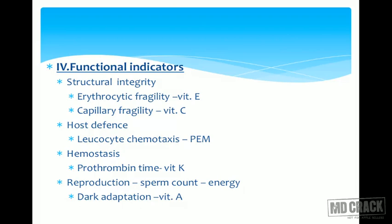Functional indicators provide another assessment approach. Deficiency of vitamin E can cause erythrocyte fragility; deficiency of vitamin C can increase capillary fragility. Protein-energy malnutrition causes problems in leukocyte chemotaxis. Vitamin K deficiency causes problems with prothrombin time. Sperm count directly correlates with the energy resources of the body, and dark adaptation can be an indicator of vitamin A deficiency.